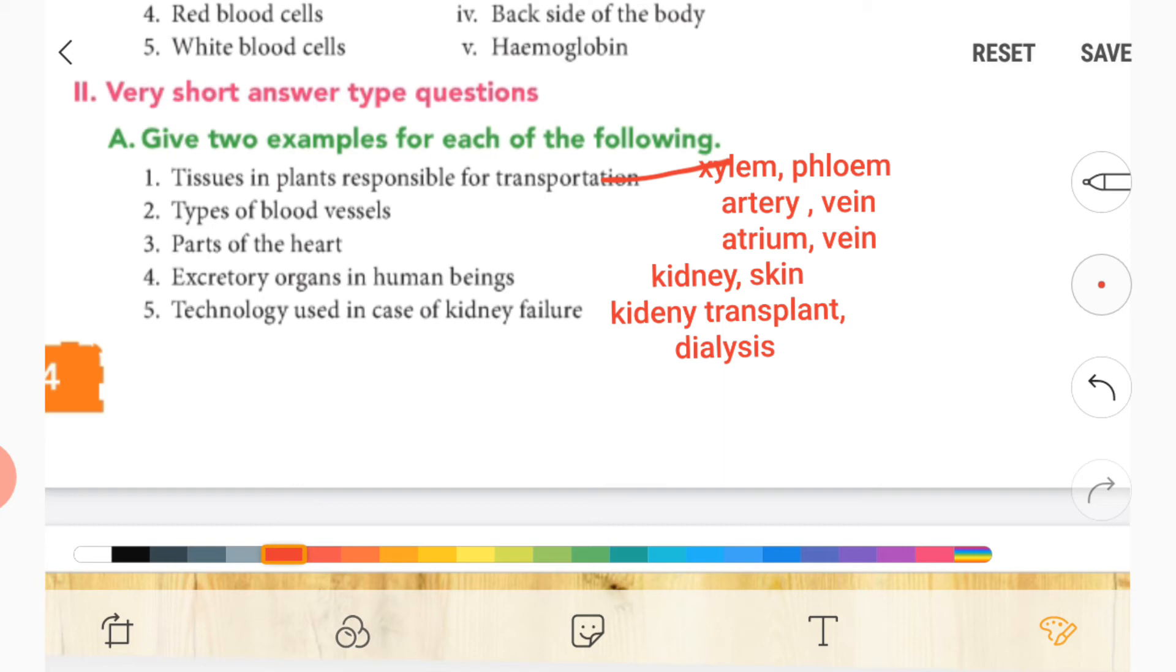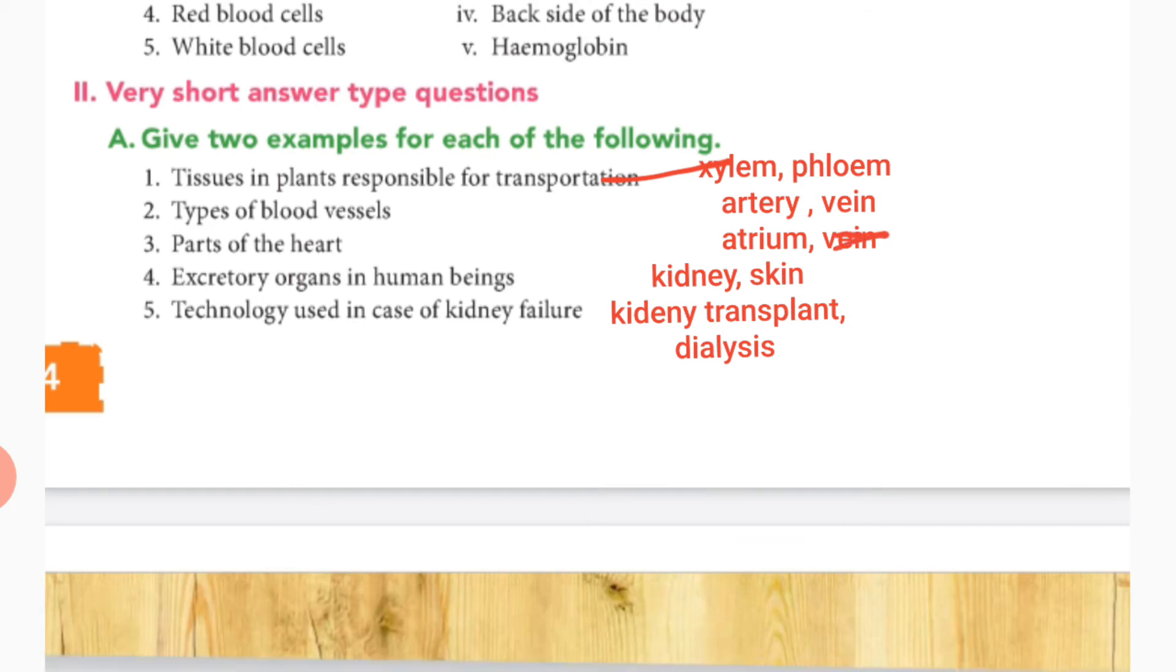Third one, parts of the heart—it is atrium and ventricles, not vein, it is ventricle.